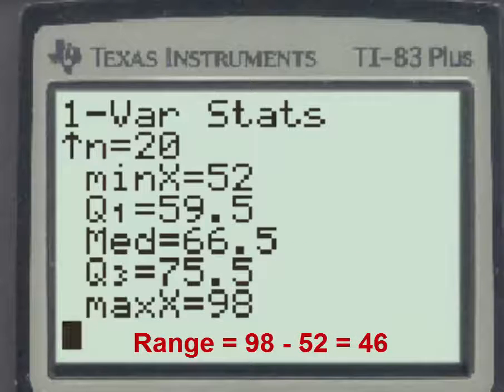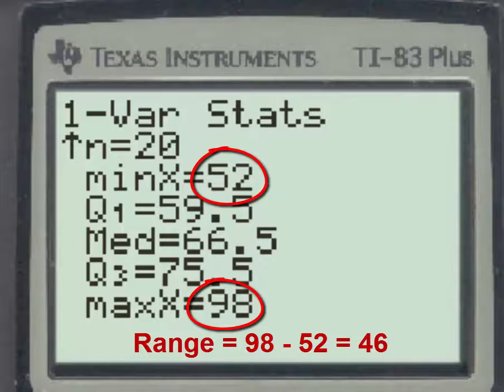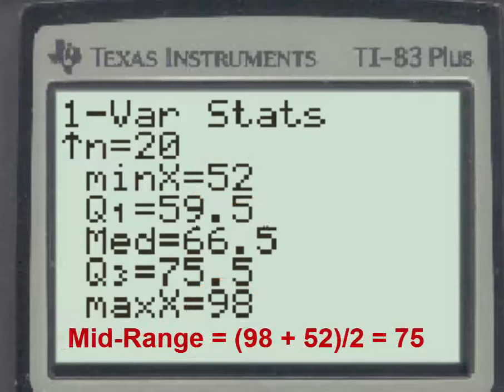The range of the data can be found by subtracting maximum minus minimum, and the mid-range can be found by averaging the maximum and minimum.